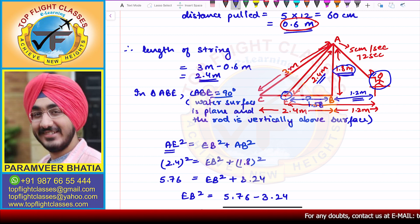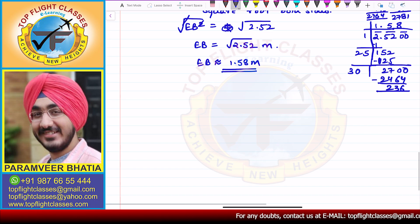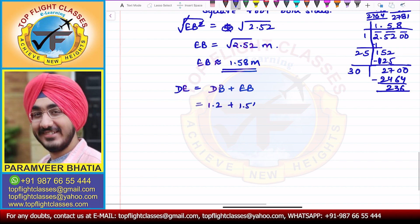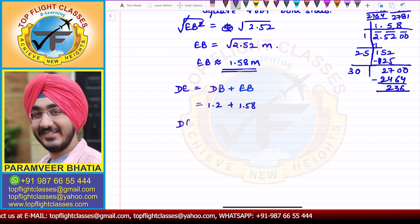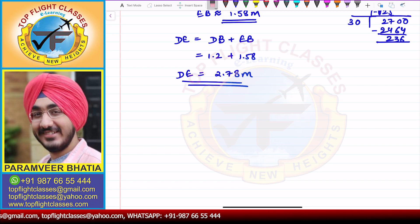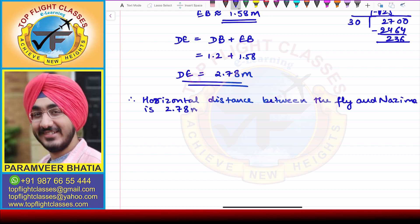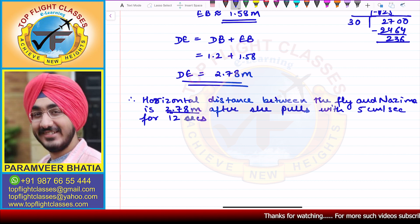Adding both distances: DE = DB + EB = 1.2 + 1.58 = 2.78 meters. Therefore, the horizontal distance between the fly and Nazima is 2.78 meters after she pulls at 5 centimeters per second for 12 seconds. This is the required answer for this question.